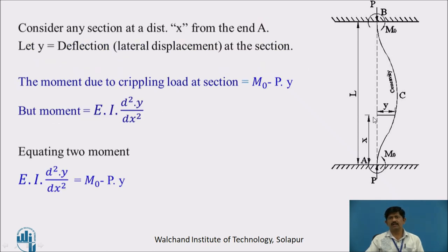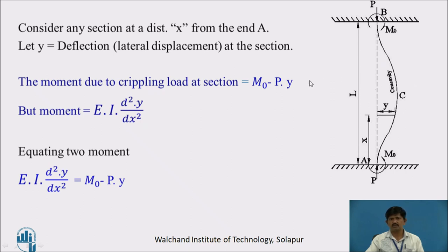We consider a section at a distance X from A which has a deflection Y at that point. The moment at this point due to the applied crippling load and fixed end moment is: M₀ (clockwise due to fixity) minus P·Y (anti-clockwise). So the bending moment is M = M₀ − P·Y. We can also express the moment as EI·d²Y/dx². Equating both: EI·d²Y/dx² = M₀ − P·Y.